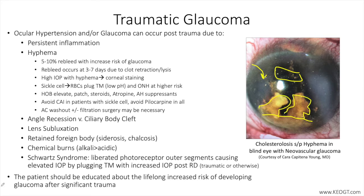Angle recession and ciliary body cleft may also occur, and these topics are covered in separate lectures available on keogt.com. Lens subluxation may lead to pupillary block and/or peripheral angle closure due to compression of the iris against the cornea. Surgical intervention is needed in these cases with removal of the lens, often combined with vitrectomy, and implantation of an anterior chamber intraocular lens or suturing an intraocular lens to the sclera or iris using various techniques.